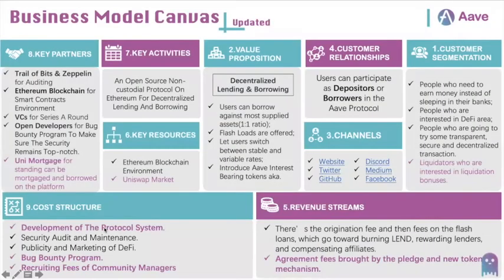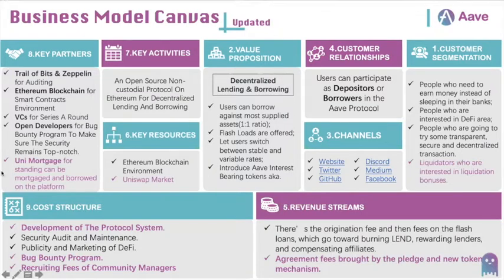Here is the business model canvas of the AAVE company. This is the updated one that was edited based on the informing strategies and the limits we analyzed for the AAVE company. There are five parts that were adjusted, and you can have a look.